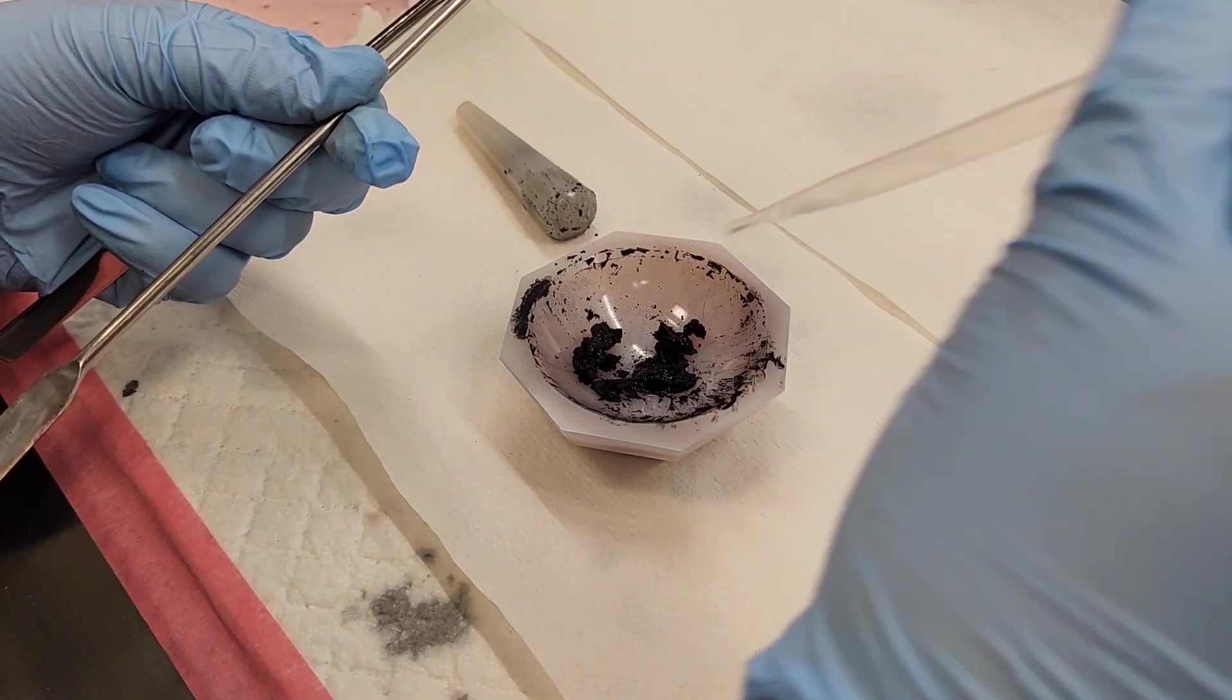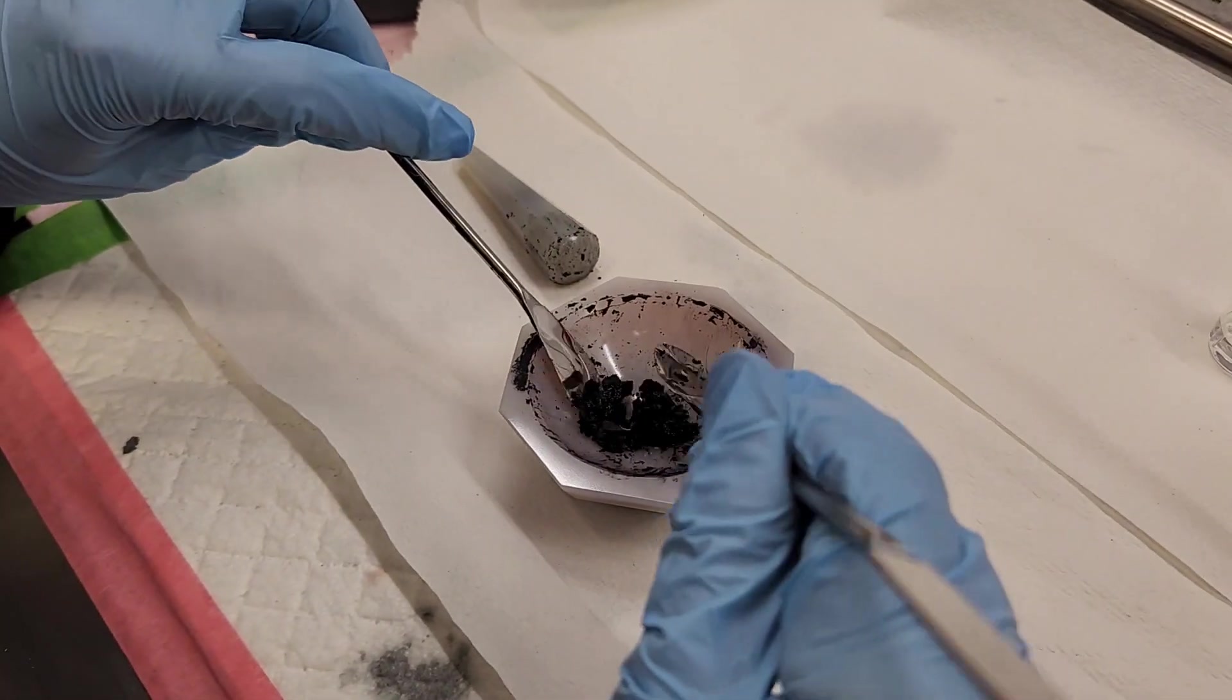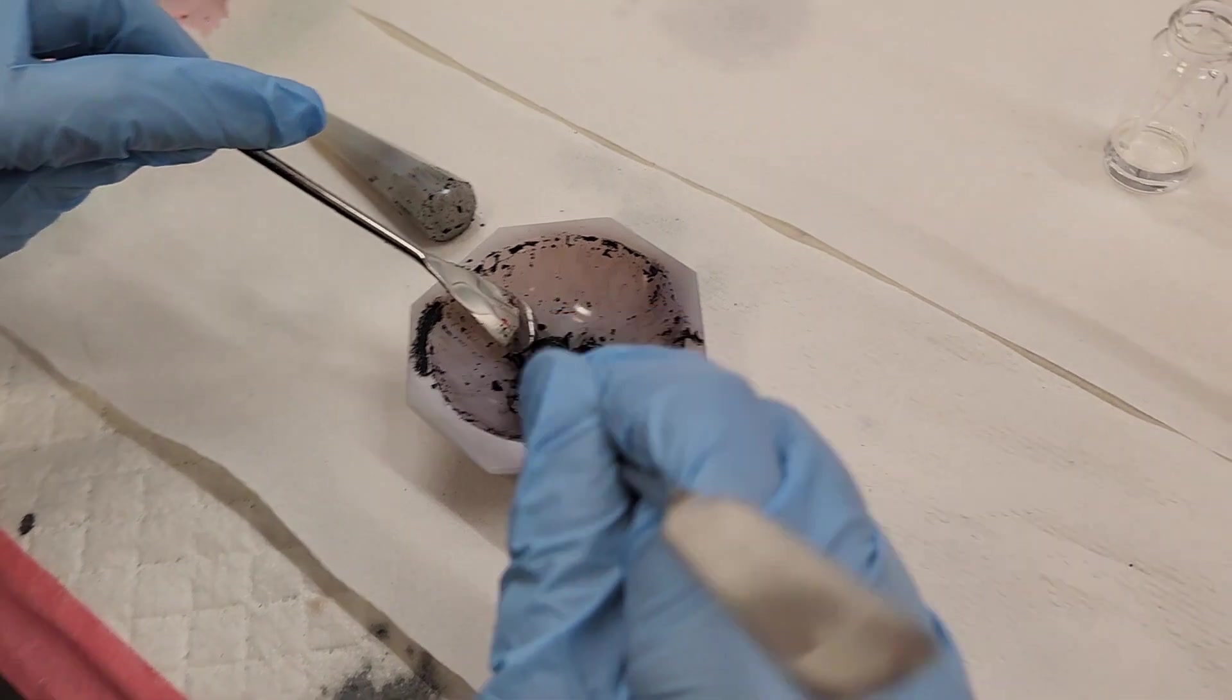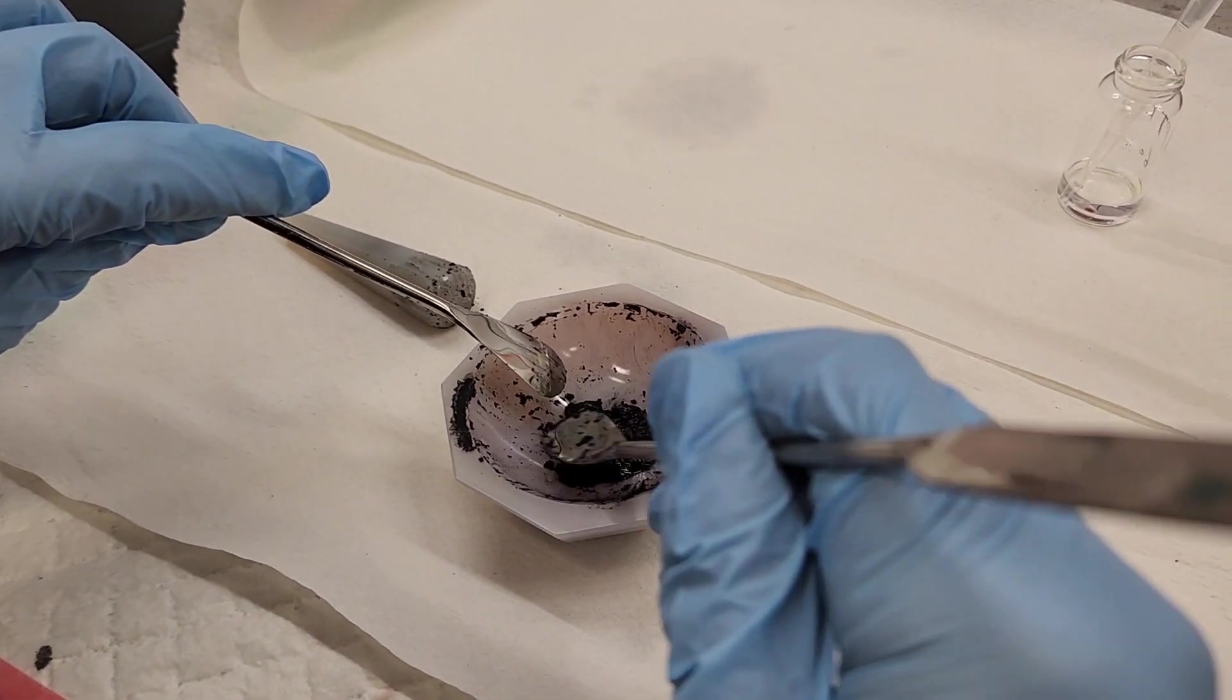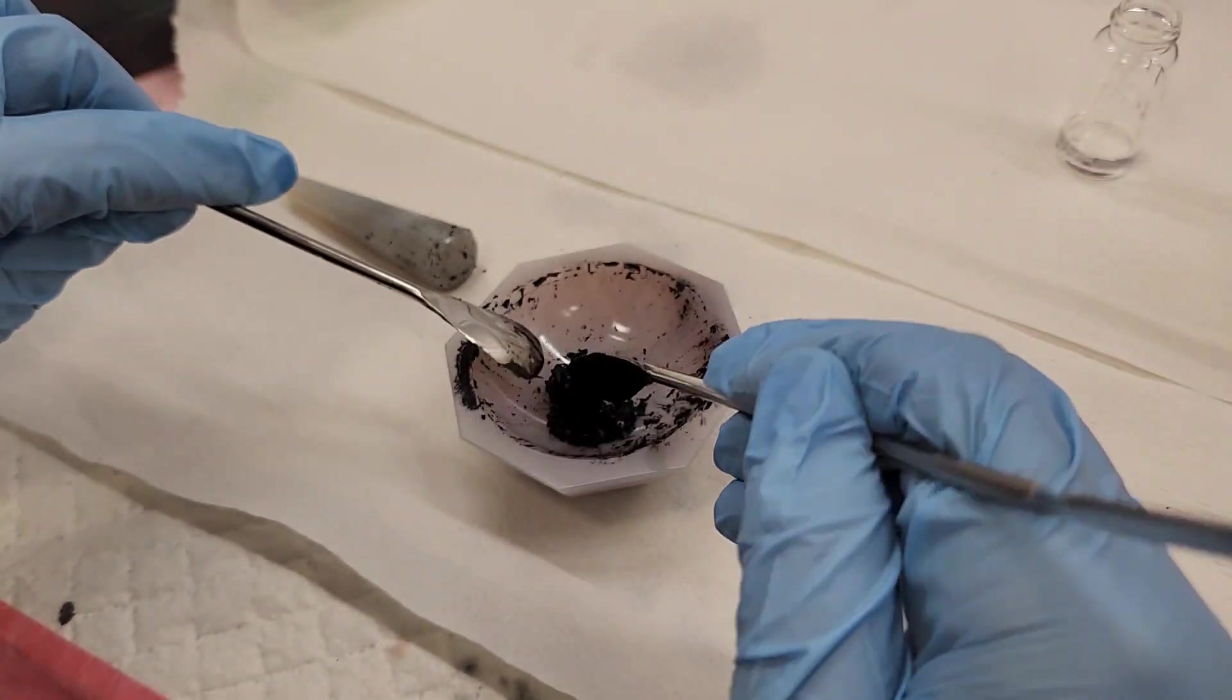We add a little bit of ethanol. Then we use two spatulas to mix the ethanol and the carbon, trying to make a single piece of carbon. In the beginning, it's very rough and does not have any structural integrity.